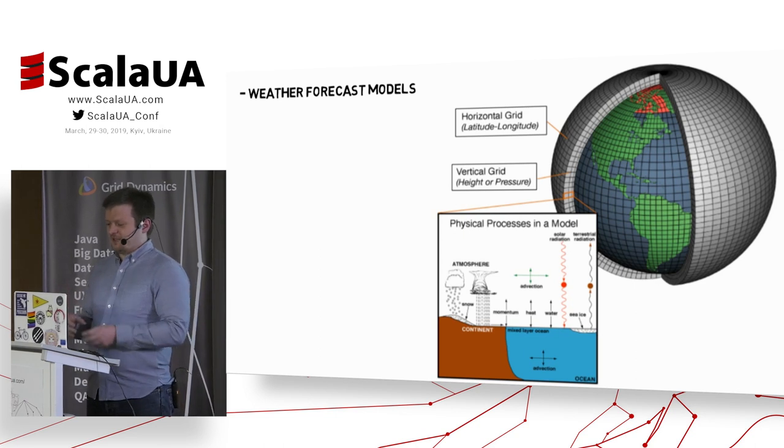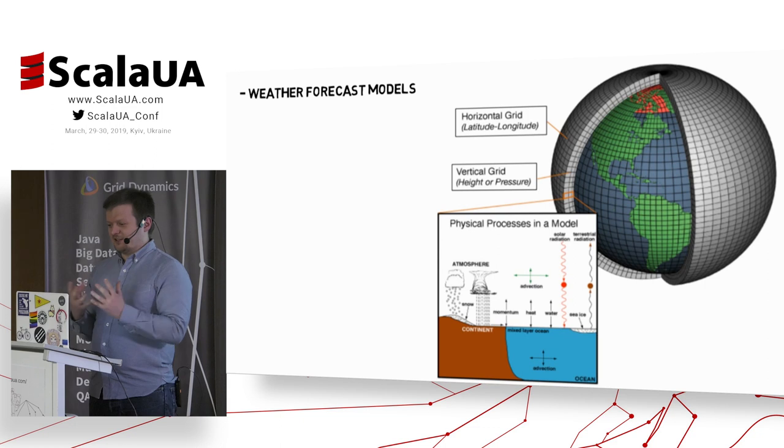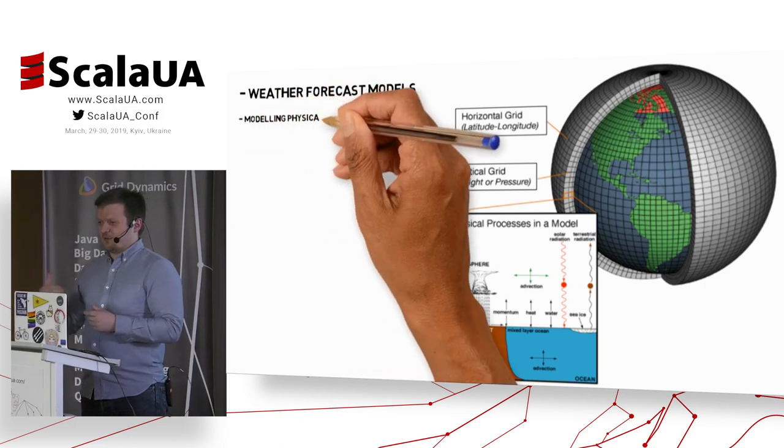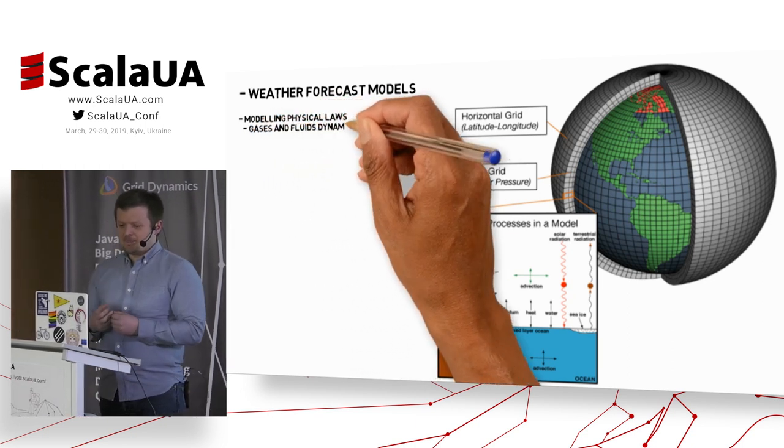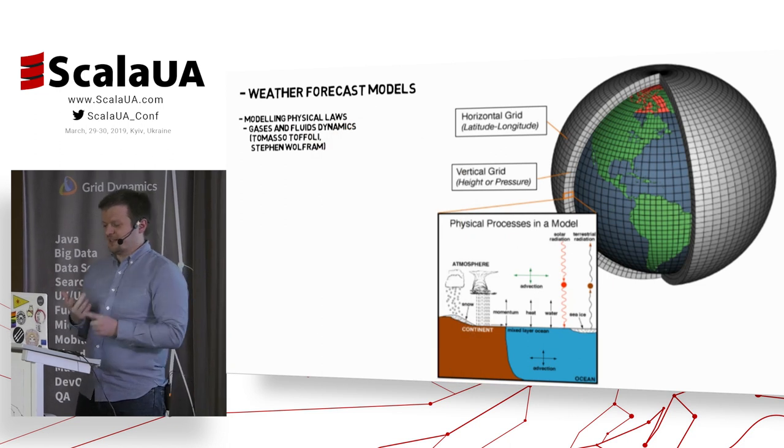And for every cell, we only need the information about the data inside the cell and of the cells around it. And this way, when we compute the whole board, the whole planet, and then again the whole planet, after some time, we can say, okay, this is how the weather will look next day or next week.